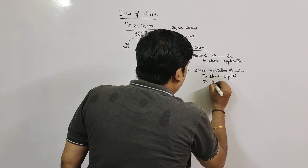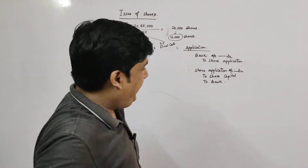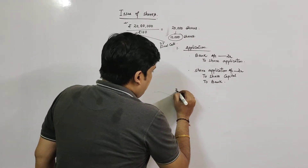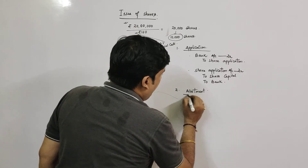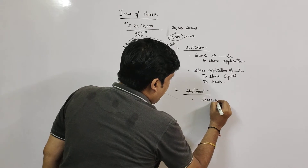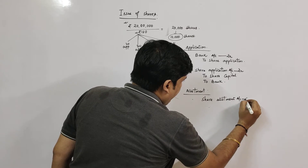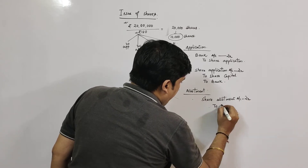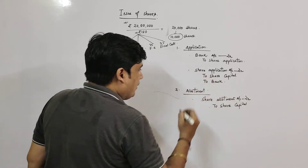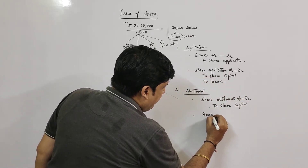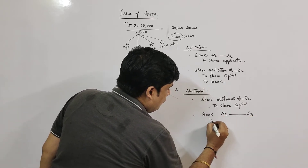Second entry: Share Application Account Dr. to Share Capital and to Bank — this Bank credit is for refunding the excess application money. Moving to allotment: Share Allotment Account Dr. to Share Capital. Since there is no premium, we won't use a premium account. Then: Bank Account Dr. to Share Allotment.